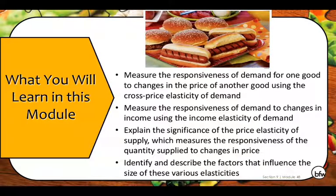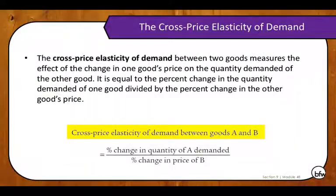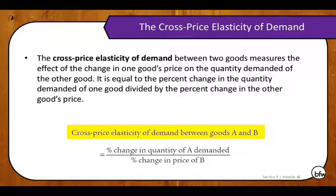On the supply side of the market, producers would like to increase output if the price of their goods were to rise — a price elasticity of supply would be useful in measuring this response. So let's start with the first of these three: the cross-price elasticity of demand. It measures the effect of a change in one good's price on the quantity demanded of the other good — equal to the percent change in quantity demanded of one good divided by the percent change in the other good's price.